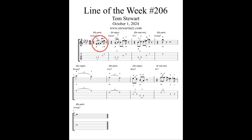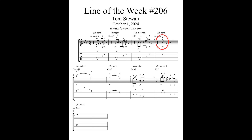Let's look specifically at the line of the week. In measure one, there's the original motif, meaning the melodic rhythm with notes that fit the harmony. In measure two, there's a melodic variation of the original motif. Measure three contains another melodic variation of the original motif, followed by an eighth note extension in measure four.